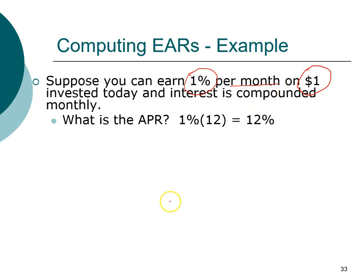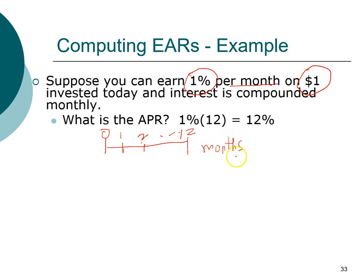So the question is how much would that grow to in one year? Looking at a timeline: we have a total of 12 periods — one year means there are 12 months. We are starting with $1 today, so our present value is $1. We'll invest this for 12 months, so n is 12, and our interest rate is 1% per month. So we can compute our future value.